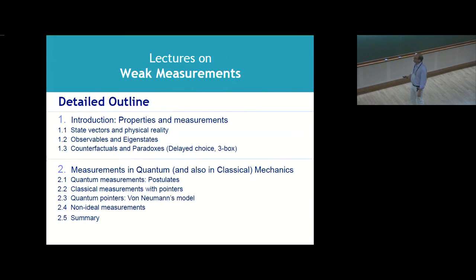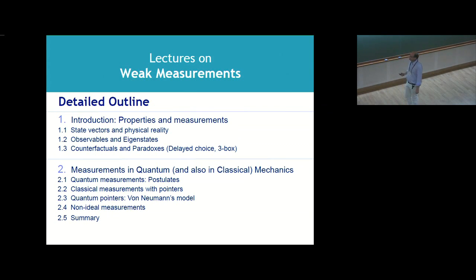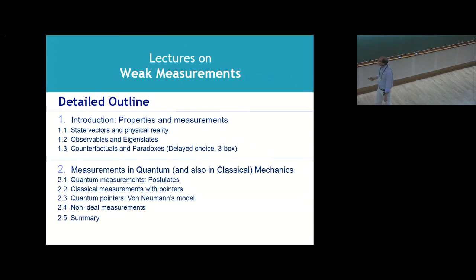In the detailed outline: first I'll talk about state vectors and physical reality — just asking some questions, I will not answer them. This is one of the problems that has been hanging on since the inception of quantum mechanics. Then I'll talk about observables and eigenstates — this is usually how we think properties are ascribed in quantum systems. You measure A, you get something proportional to an eigenvalue, and the system is in an eigenstate. Then I'll talk about the delayed choice experiment and the three-box paradox.